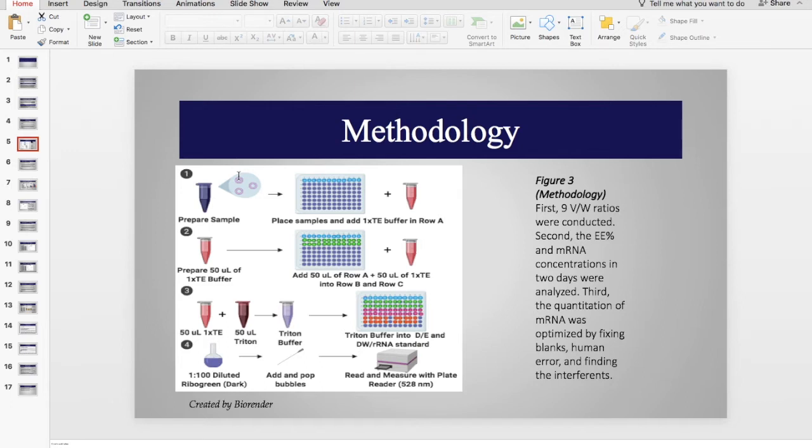You might be wondering why use a Trident solution. The reason why we used a Trident solution was because it broke apart the sample cells. And when it broke apart these sample cells, the mRNA inside it came out. When we put ribogreen, whatever it intercalated to or bound to was what fluoresced.